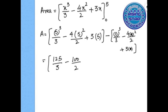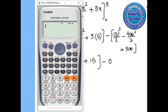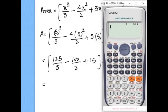Simplifying: 125 over 3 minus 100 plus 15. The lower limit value is 0. Using the calculator: 125 over 3 minus 100 over 2 plus 15 gives the answer 20 over 3.